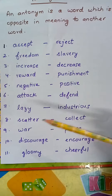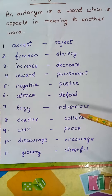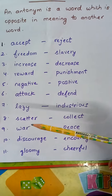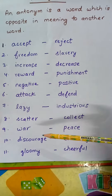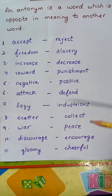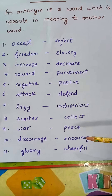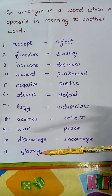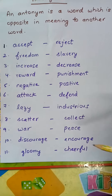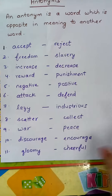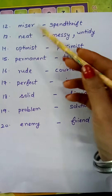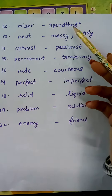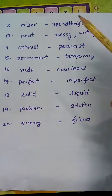Scatter — bikherna; collect karna. War — yod; peace — shanti. Discourage karna — encourage. Gloomy means sad — cheerful. You know what is cheerful? Hasmukh. Miser — conjuice; extravagant — kharchila.